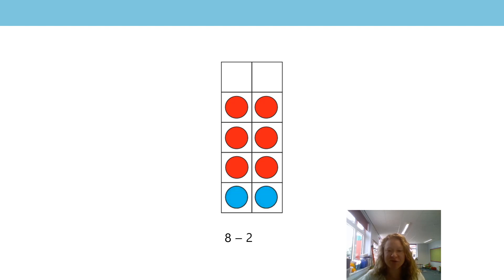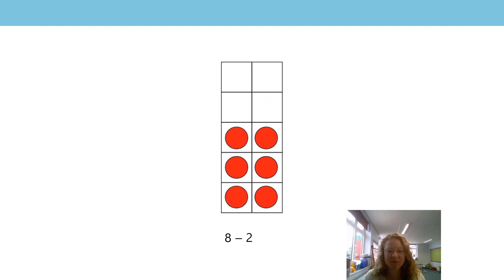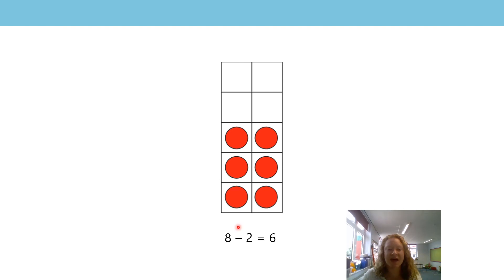This time: eight subtract two — there are two that are going to disappear. There they go, and now we have six. So we started with an even number — it was nice and flat at the top with no gaps — and then we took away two from the bottom and we've still got a nice flat top. So we started with an even number, subtracted two, and we've still got an even number: the previous even number, which came before eight.